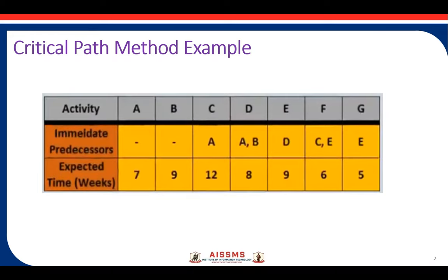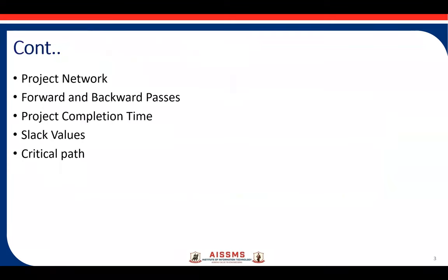Here is the example. Activities A to G are there, and for each activity, the predecessors and expected time in weeks is mentioned. For this example, we have to find out the critical path using the CPM critical path method. When finding the critical path, we have to go through all the steps enlisted here.